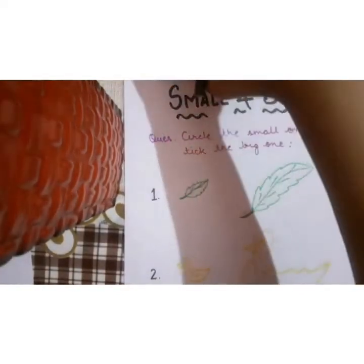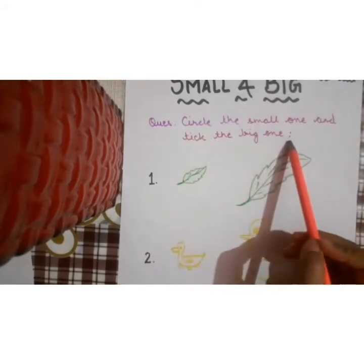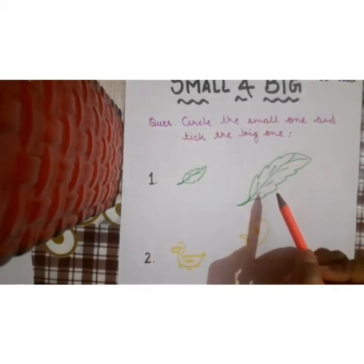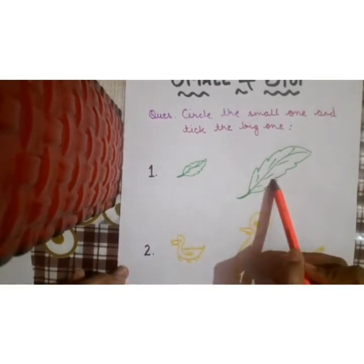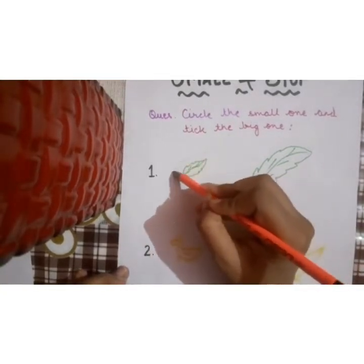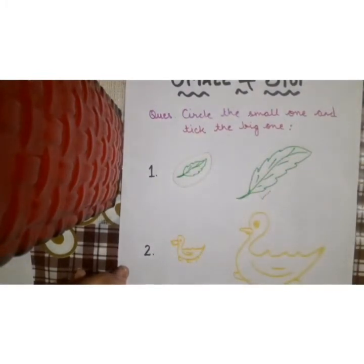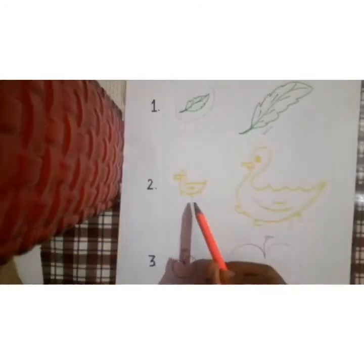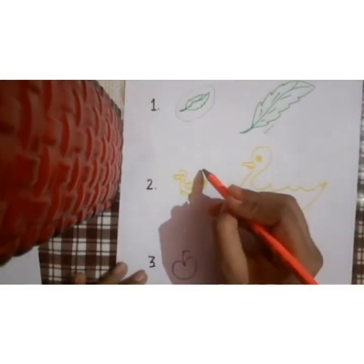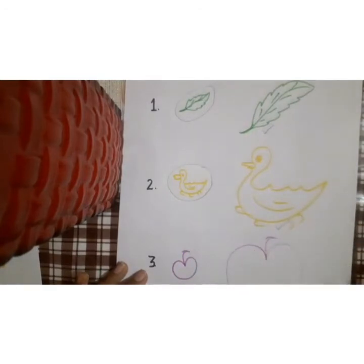Let's keep it aside. Now, circle the small one and tick the big one. You have to circle the small one and tick the big one. Is this small or this one? Very good — the first one is small. So you have to circle the small one and tick the big one. Next, which one is small? Yes, this is small. So you have to circle the small one and tick the big one.